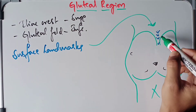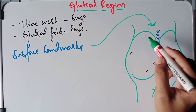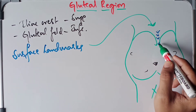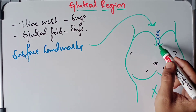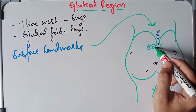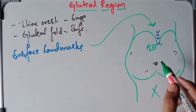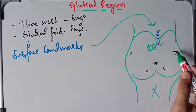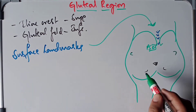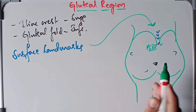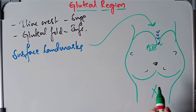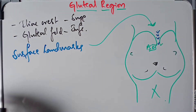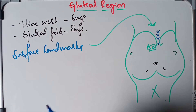To summarize the surface landmarks: the spinal segments L4, L5, S1, and S2; the boundary of the iliac crest on either side; the posterior superior iliac spine on either side; the tip of the coccyx; the tip of the greater trochanter on either side; the ischial tuberosity; and the gluteal fold.